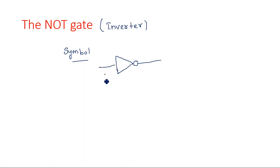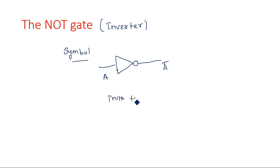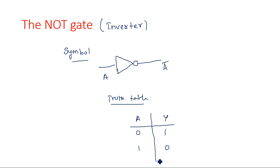The symbolic representation of NOT gate is like a buffer with a bubble. If A is given, A-bar is the output — bar here represents the NOT complement. So input is equal to A, output is equal to A-bar. Looking at the truth table: when A is 0, output Y is 1; when input is 1, output is 0. This is how the inverting action takes place.